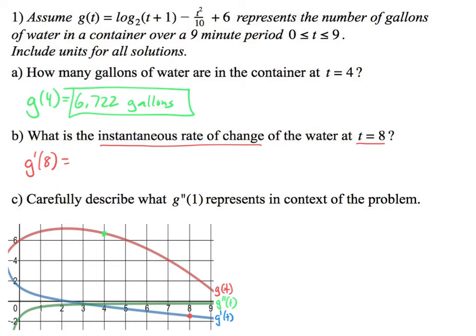So the answer technically, when you plug it in a calculator, you will get negative 1.44 gallons per minute. It's gallons per minute because it's gallons in minutes and it's a rate. And I can look at the picture for it.